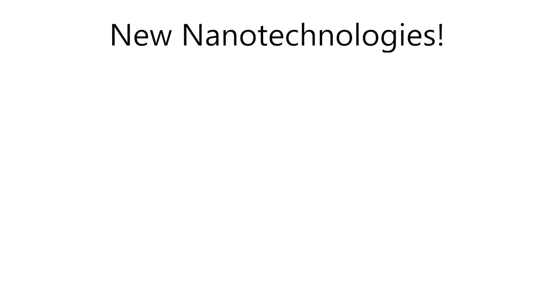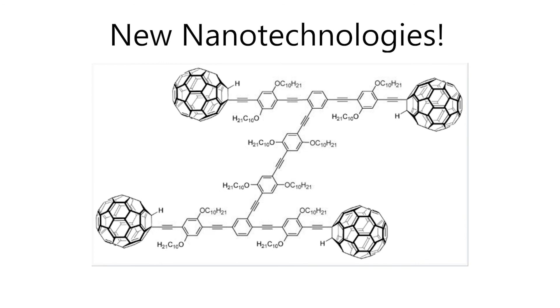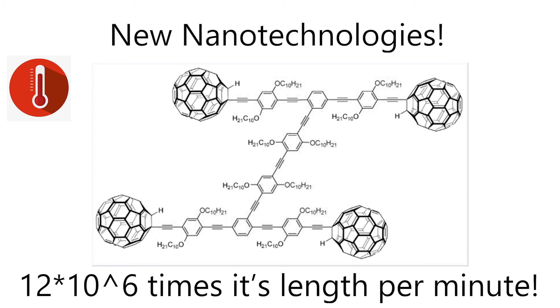And things like this are slowly coming to reality. I mean, check out this nano car. This car has buckyball wheels and alkaline axles, and at 300 degrees Celsius, it can travel 12 million times its length in one minute. That's crazy!